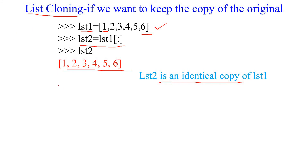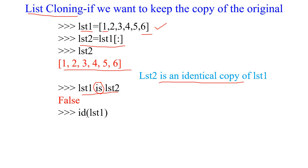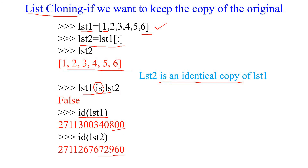With cloning, list1 and list2 are two different objects. If you check using the `is` operator — list1 is list2 — you get False, because they are different objects. Checking `id(list1)` and `id(list2)` gives two different values. Unlike aliasing, changes to one list do not reflect in the other, because they point to two different objects. This is what cloning means — so friends, like and subscribe.